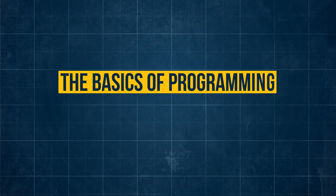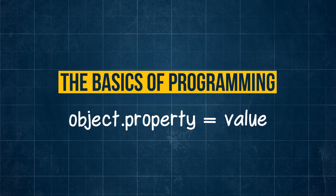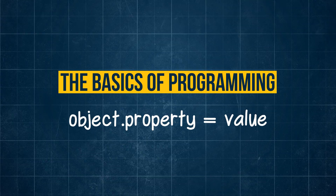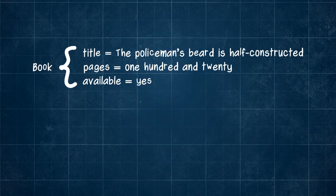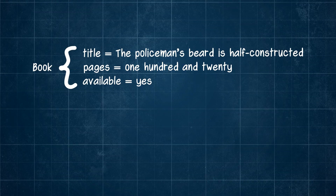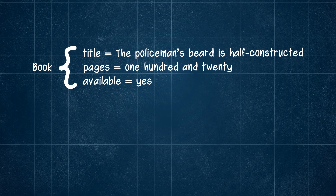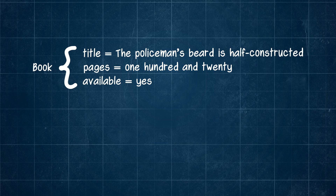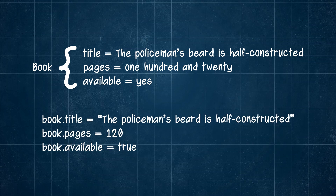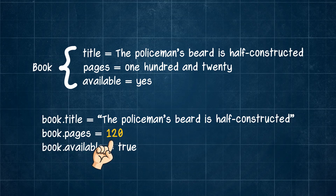The basic principle of programming is properties of objects having particular values, but while our brains might easily understand that a book called The Policeman's Beard is Half-Constructed has 120 pages, the computer needs a bit more help understanding that these are words and these are numbers.